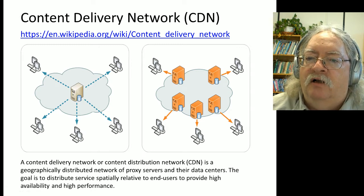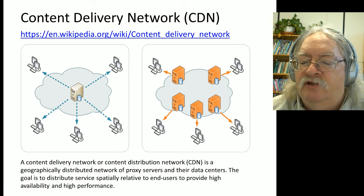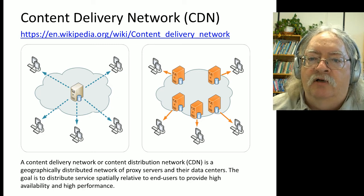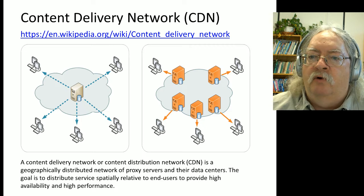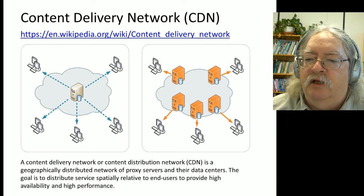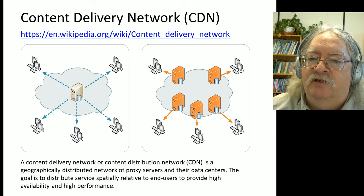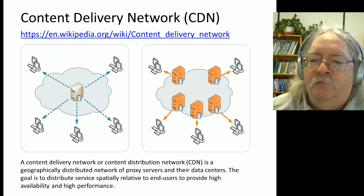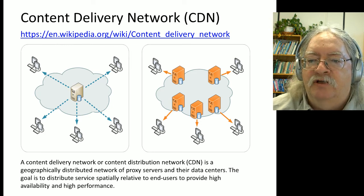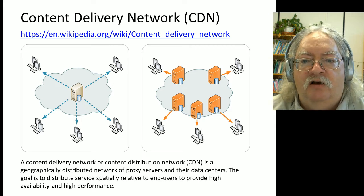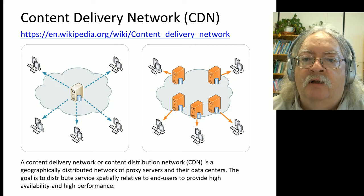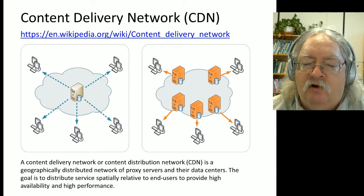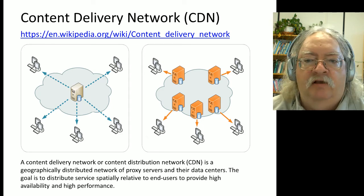For example, a content delivery network might have a server in Toronto, another one in New York, another one in London, another one in New Delhi, another one in Beijing. When somebody clicks on a website like Amazon.com, they don't get it straight from Amazon.com. They get it from the content delivery network server that's in their local city - London, Beijing, etc.